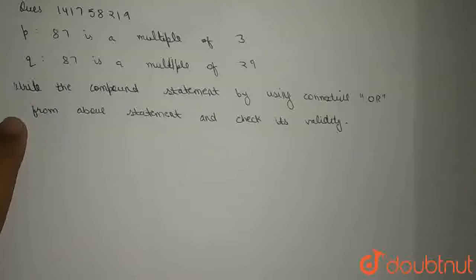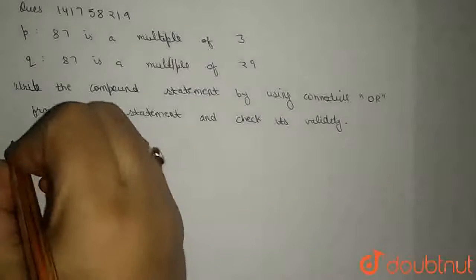Hello everyone, our two statements are given, P and Q. Where P is 87 as a multiple of 3, Q is 87 as a multiple of 29. Write the compound statement by using connective OR from above statement and check its validity.